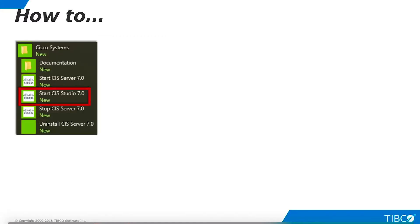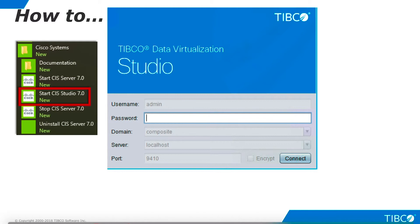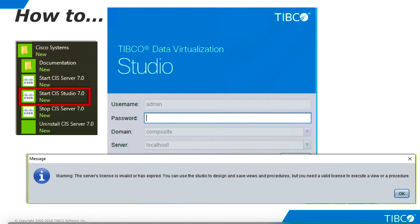Now start TDV Studio from a Windows machine. If you need to install Studio, a separate tutorial is available that will help you with it. Enter login information. TDV is delivered with a default user of admin with a default password of admin. This user's domain is named composite. Enter the address of the server. If you changed the base port, enter the correct port here. This warning message appears because we haven't installed the license yet.